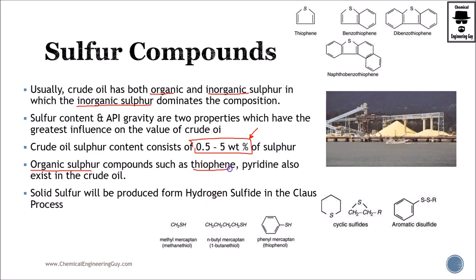For instance, thiophene, pyridine, and so on. Sulfur is not essentially found just as solid sulfur in crude oil. Sulfur will be found in molecules such as thiophene, benzothiophene, or dibenzothiophene, also cyclic sulfides, aromatic disulfides, or even mercaptans or thiols.